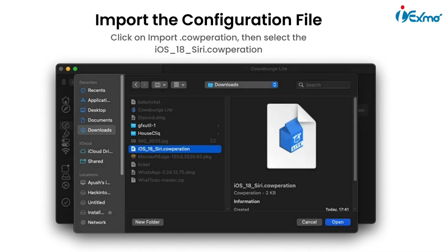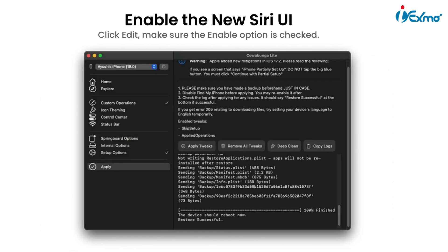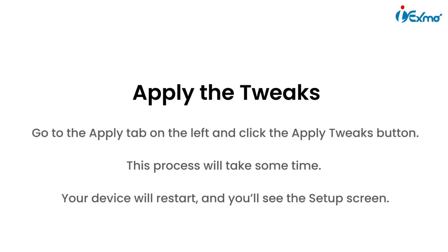Click Edit and ensure the Enable option is checked. Then go to the Apply tab on the left and click the Apply Tweaks button. This process will take some time and your device will restart. You'll see the setup screen.